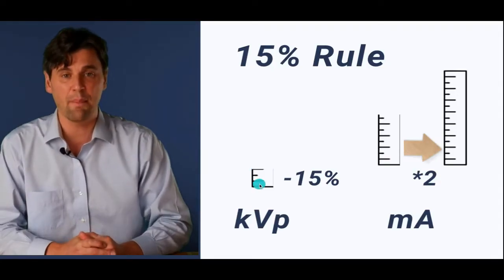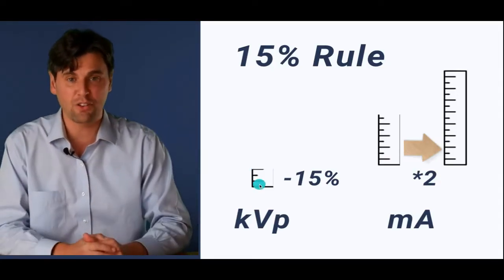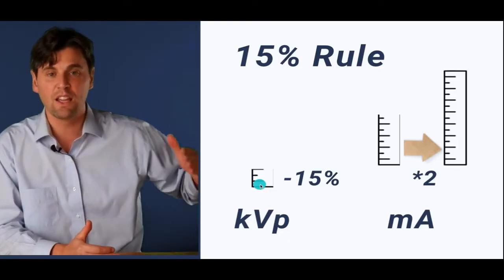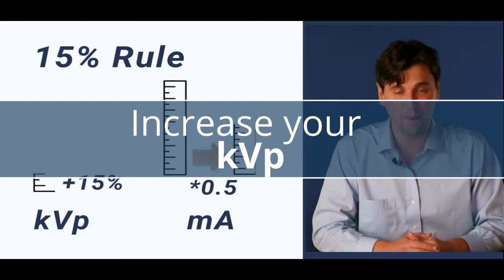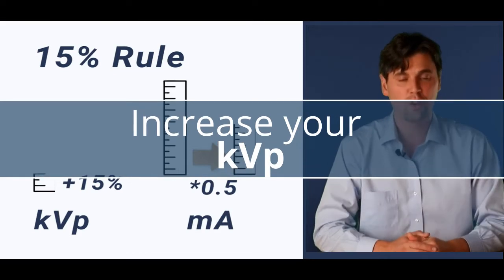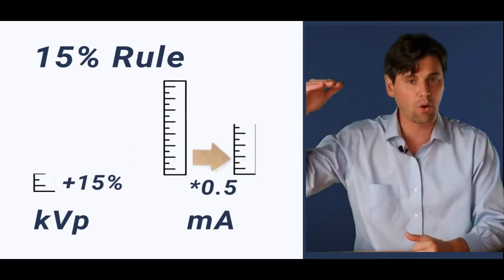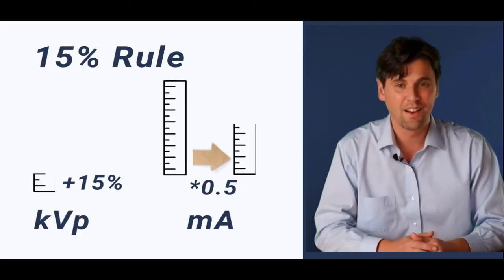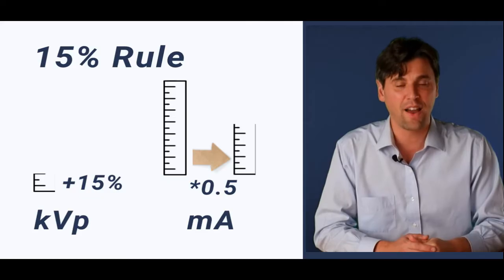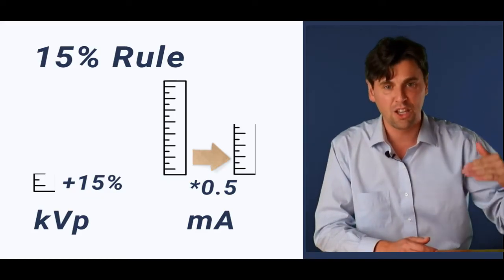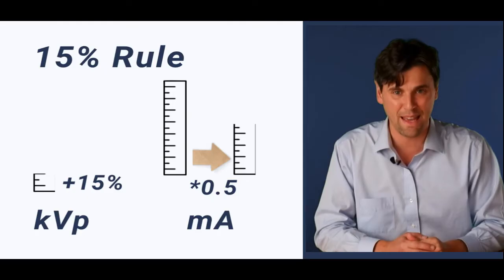In that case, you need to increase your MA by a factor of 2. So if you had 100 MA, you need to have 200 MA. Increase your KVP by 15%. So if you're at 100 KVP and you go to 115 KVP, for instance, then you need to decrease your MA by a factor of 2. So if you were at 100 MA, you need to go down to 50 MA.